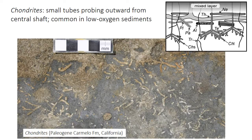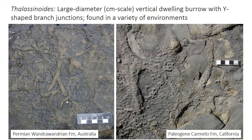Two other quite common trace fossils have more widespread distribution and aren't really diagnostic for any particular ichnofacies. Chondrites is composed of small-diameter tubes that repeatedly probe outwards horizontally or diagonally from a central shaft — the complete burrow resembles plant roots but is made by a worm-like animal. Chondrites is common in low-oxygen sediments. Thalassinoides is a large, centimeter-scale vertical burrow with Y-shaped branch junctions — an extremely common and widespread trace fossil found in a variety of continental shelf environments and occasionally in deep-sea environments.